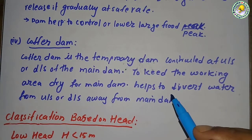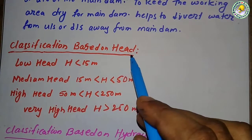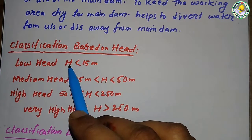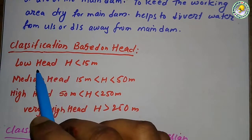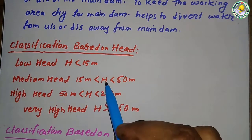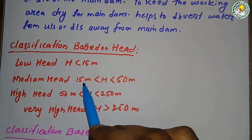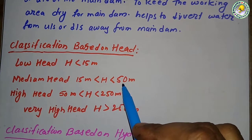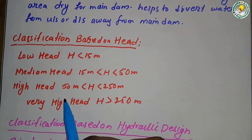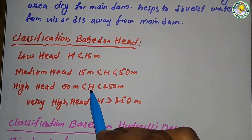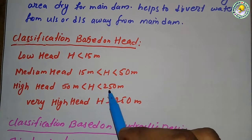Classification based on head: if the head of water is less than 15 meters, the dam is a low head dam. If the height is greater than 15 meters and less than 50 meters, it is a medium head dam. A high head dam has a height greater than 50 meters and less than 250 meters.